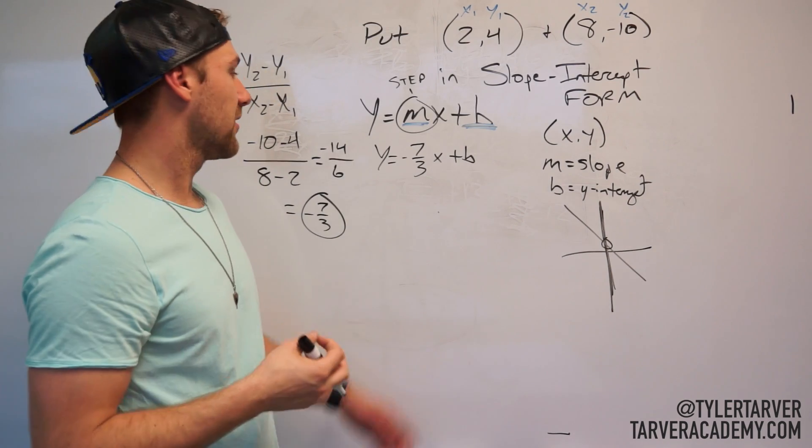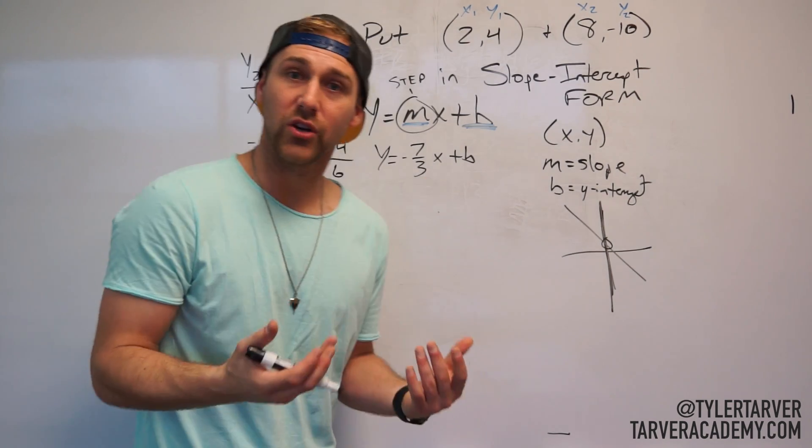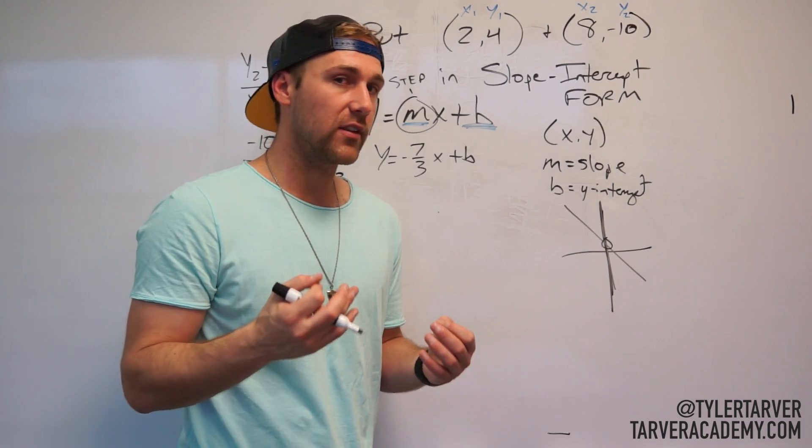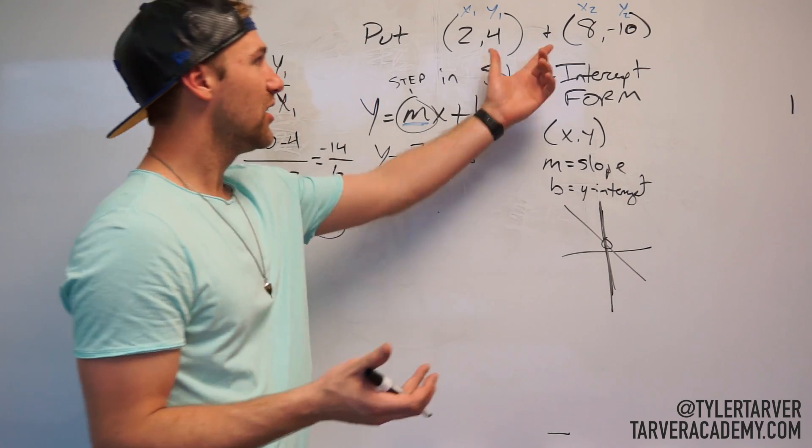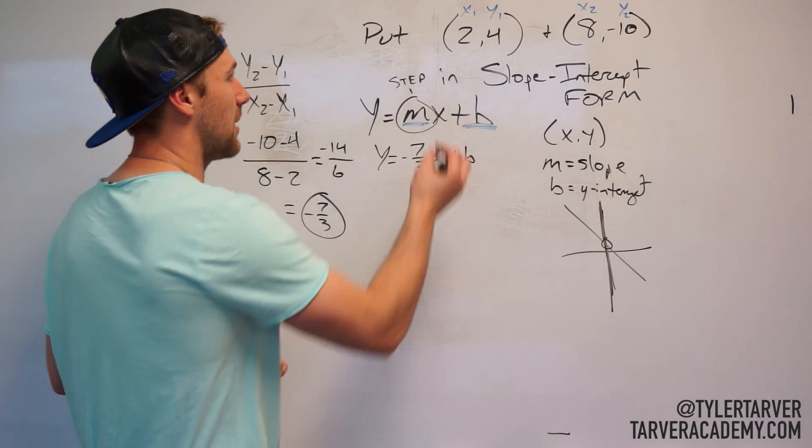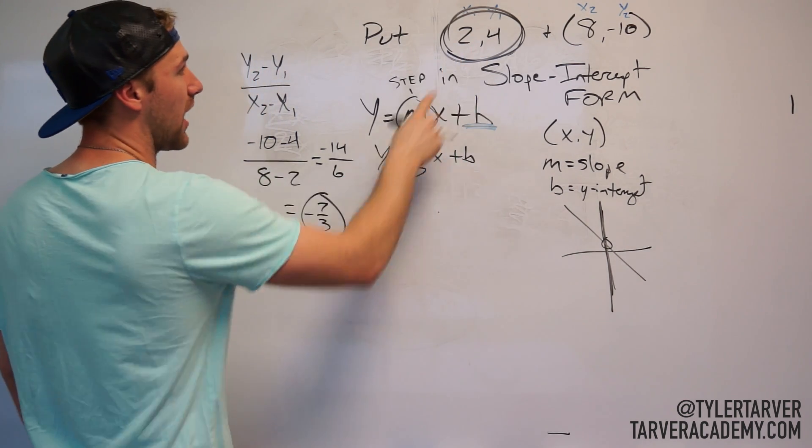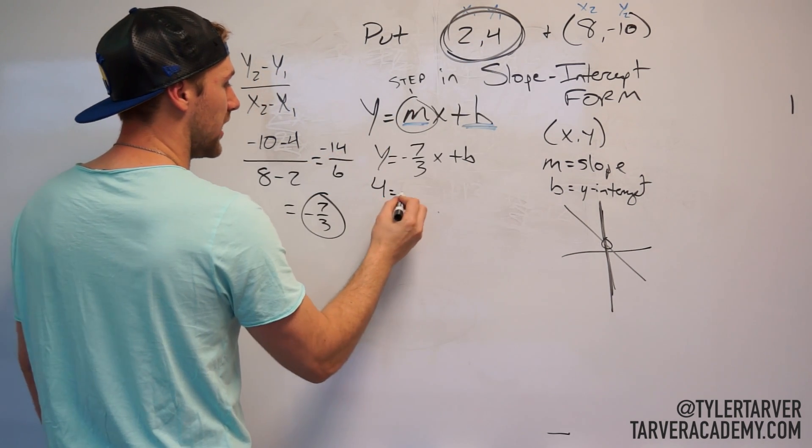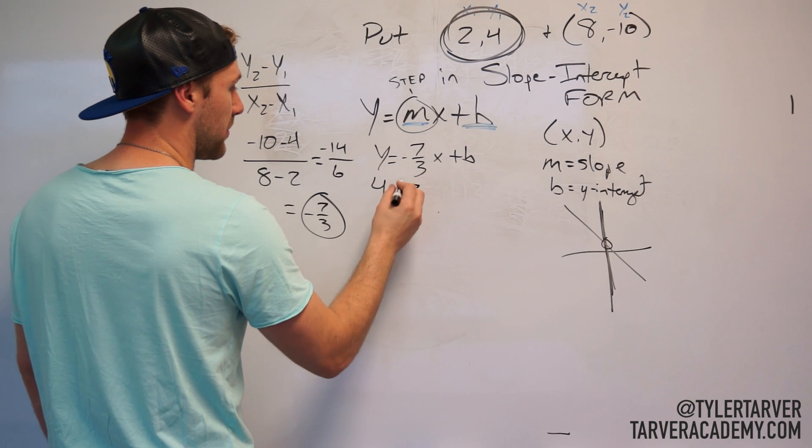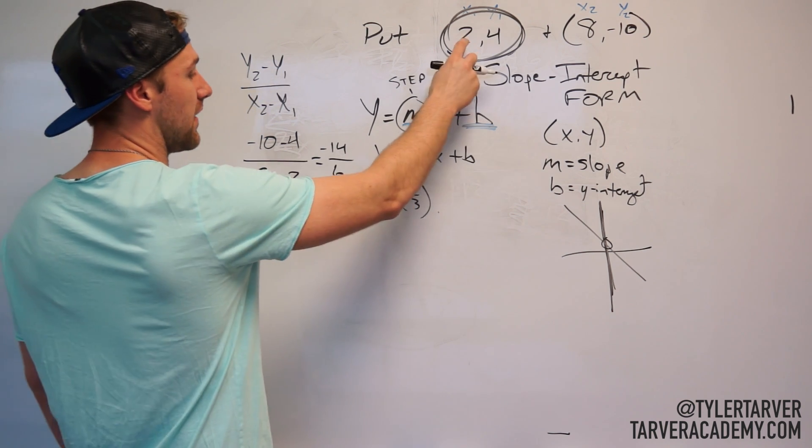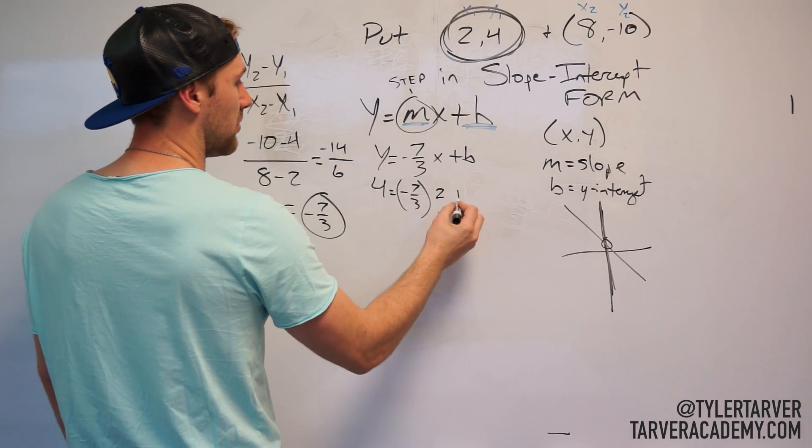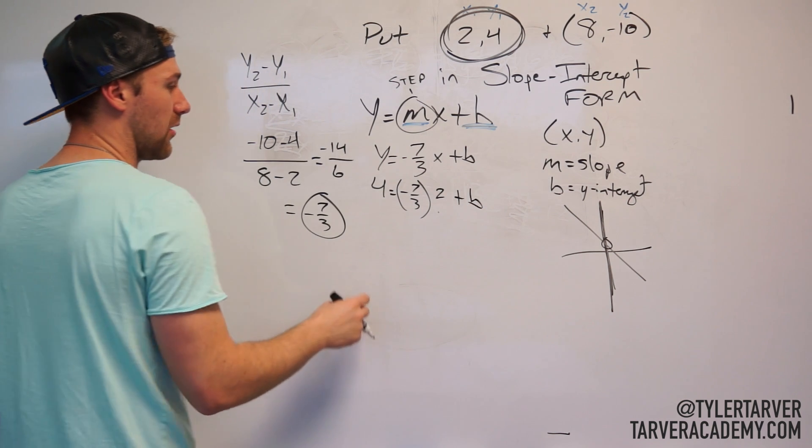Okay, so we got our equation here. I need to find b. You're thinking, how can you find it, Tyler, if I don't have x and y? You do. Any coordinate on this line can be your x and y. You happen to have two of those coordinates. I'm going to use this one because these numbers look easier. So I'm going to use my y, which is 4, equals negative 7 over 3. I'm going to put that in parentheses because it's hard to see. And then our x is 2 plus b, okay?